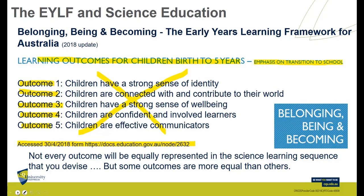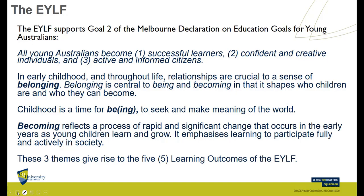These five items — strong sense of identity, connected to their world, strong sense of wellbeing, confident effective communicators — we can see they're very much connected to the ACS as well. These are the principles the ACS wants to bring through, so matching early years to ACS shouldn't be too hard. The EYLF comes from the Melbourne Declaration on Educational Goals, goal number two: successful learners, confident creative individuals, active informed citizens. And in early childhood, throughout life, relationships are crucial — so belonging is the central theme.